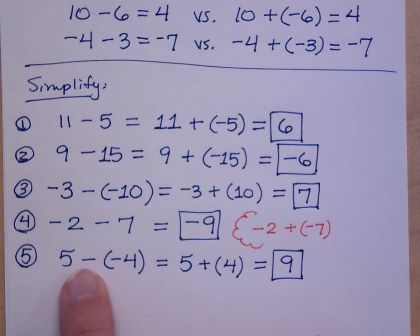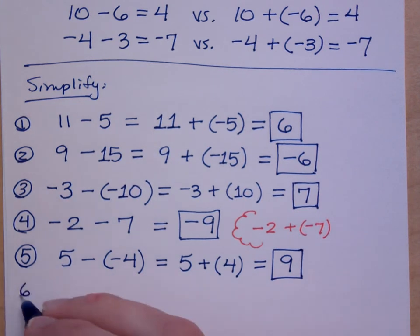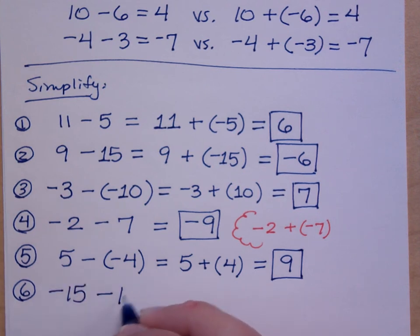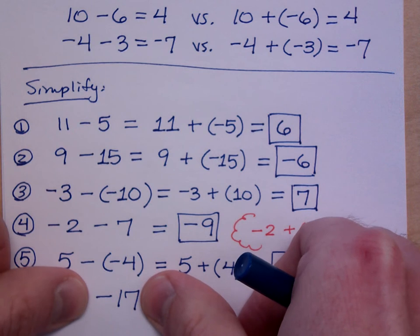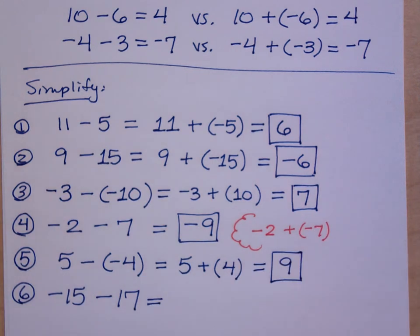Okay. So, when you're subtracting a negative, I would rewrite it. However, if I have negative 15 minus 17, am I subtracting a negative here? No. I've got two negatives that I'm combining together, right? I have negative 15, and I have negative 17. So, combining two negatives through addition gives you what? Negative 32. The larger negative number, and 15 and 17 combined to give you 32. Do you all agree with that?